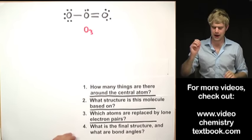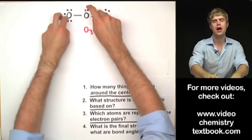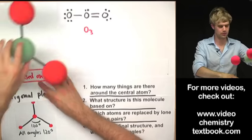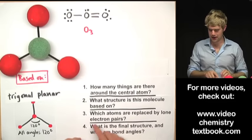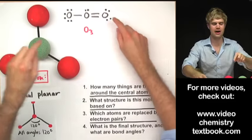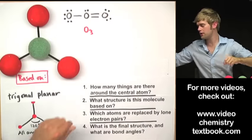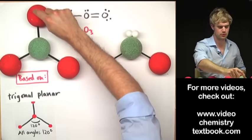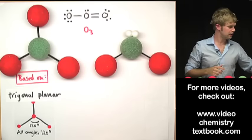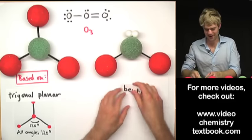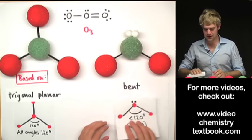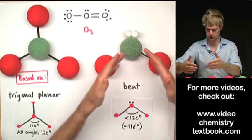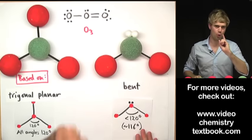O3 (ozone): how many things are on the central atom? Two bonds and one lone electron pair — three things total. That means it's based on a trigonal planar shape. Instead of three atoms as in trigonal planar, we have two atoms and one lone electron pair. This gives a bent molecule, with an angle of less than 120 degrees — about 116 degrees — because the lone electron pair is pushing a little harder.